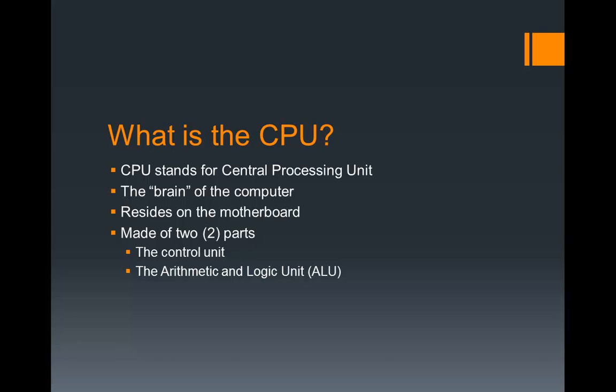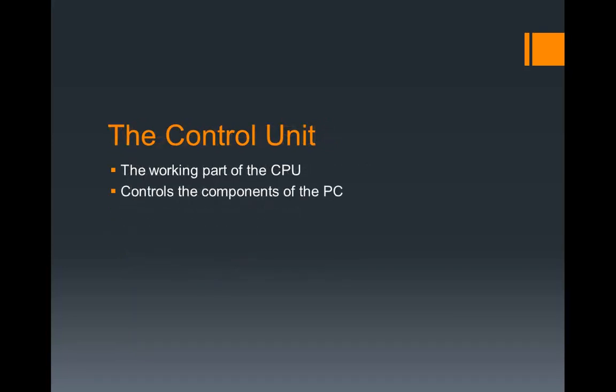Now there are two main parts to the CPU. There's the control unit, and there's the arithmetic and logic unit, or the ALU. The control unit is basically the working portion of the CPU. It's what does all of the operations that the CPU would normally have to do, other than mathematical operations, which we'll get to in a minute. The control unit is connected to every other portion of the computer — it's basically the part of the CPU that controls the rest of the computer.